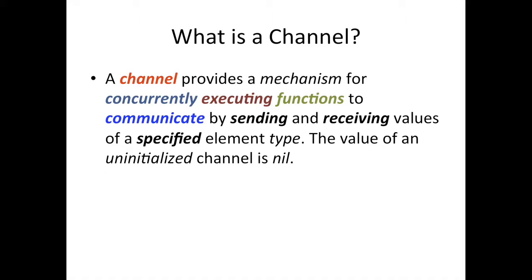If we add multiple processors, one processor could tackle executing one function while another processor tackles the other function, and they'd be executed in parallel — but they have to be written with concurrency in mind so that they don't interfere with each other. So channels allow concurrently executing functions to communicate with each other. If one function needs to produce a value consumed by another, channels are one way to allow them to do that — by sending and receiving messages of a specific type.